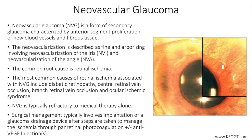The differential diagnosis includes acute or chronic uveitis, acute or chronic angle closure, ocular tumors, iatrogenic causes, and trauma. Anterior segment neovascularization can occur without retinal ischemia, as is the case with pseudoexfoliation syndrome, isolated iris melanomas, Fuchs heterochromic uveitis, and other types of uveitis.